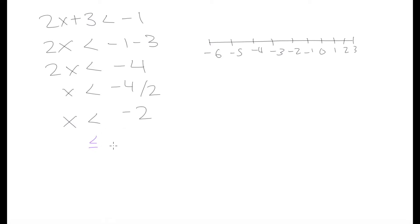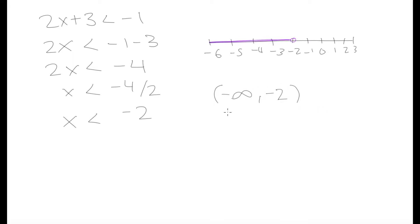If it was less than or equal to negative 2, the sign would look different. So we put an open bubble on negative 2 — we're not going to color it in. Our value of x is everything to the left of negative 2. In interval notation, our values go from negative infinity up to negative 2, with a regular parenthesis because negative 2 is not included in the possible values for x.